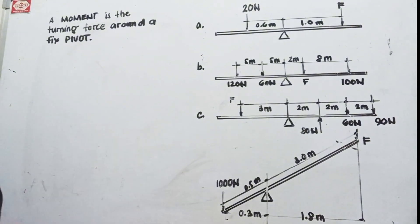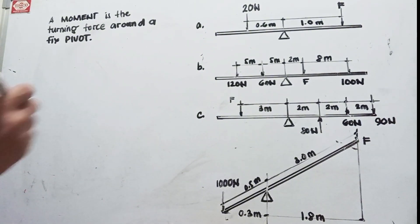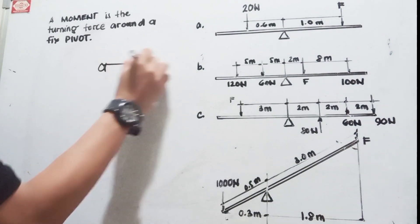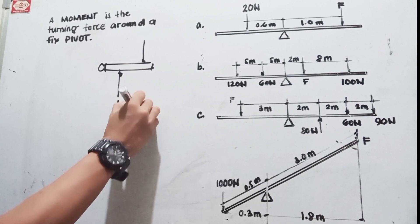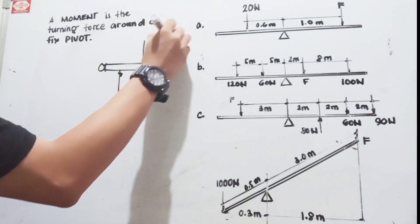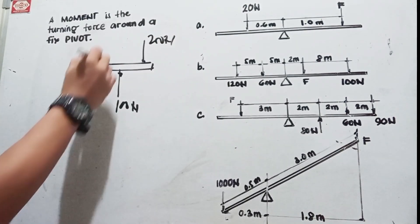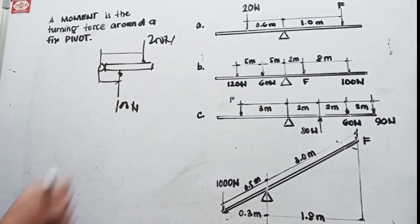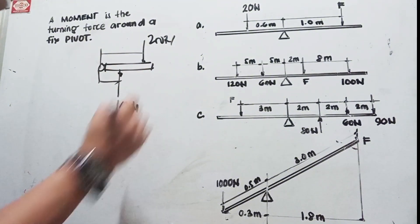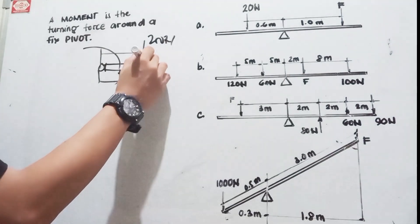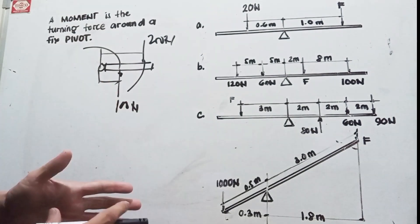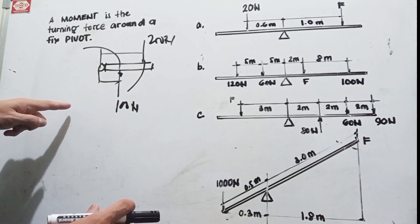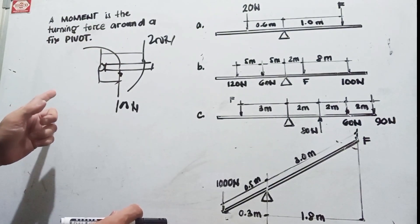The value is either going clockwise or counterclockwise. Going back to the door example, if you have two forces — say 100 Newtons and 200 Newtons — you multiply the distances and get the torque, then determine if it goes counterclockwise or clockwise. Signs going clockwise are negative and going counterclockwise are positive.